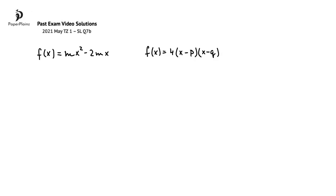In this question, we are told that f(x) can also be written as 4 times (x minus p) times (x minus q), and we have to find the value of p and the value of q.